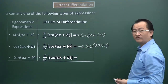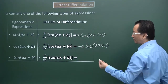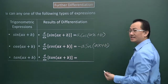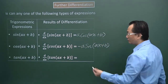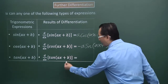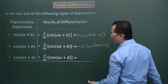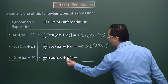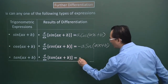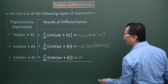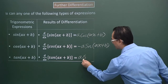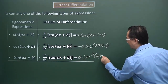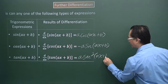As for the tangent function, differentiating that will give me secant squared. But I have to be mindful of the angular expression. The result of differentiating the angular expression will be A, then secant squared bracket, and the expression of the angle.